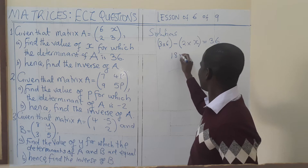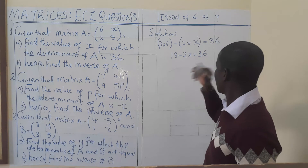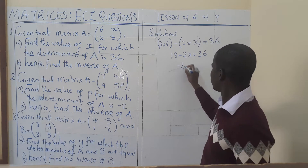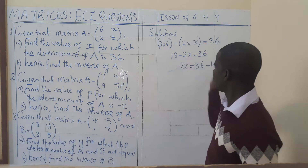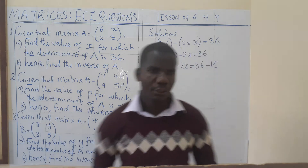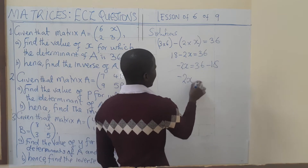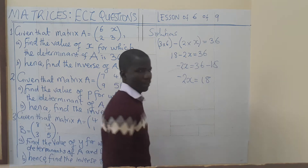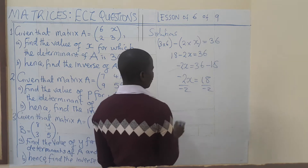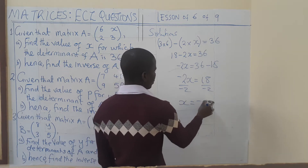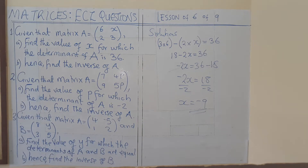So we get 18 minus 2X equals 36. Then we rearrange: minus 2X equals 36 minus 18. Don't make a mistake of leaving out the minus here. So minus 2X equals 18. We divide both sides by negative 2, and X equals negative 9.